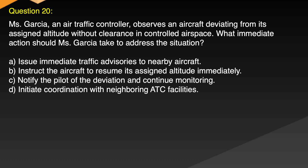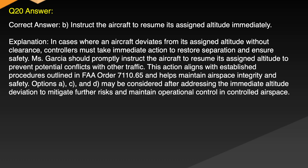Question 20. Emis Garcia, an air traffic controller, observes an aircraft deviating from its assigned altitude without clearance in controlled airspace. What immediate action should Emis Garcia take to address the situation? A. Issue immediate traffic advisories to nearby aircraft. B. Instruct the aircraft to resume its assigned altitude immediately. C. Notify the pilot of the deviation and continue monitoring. D. Initiate coordination with neighboring ATC facilities. Correct answer: B. Instruct the aircraft to resume its assigned altitude immediately.